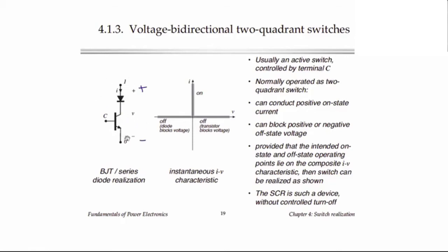As far as conducting current is concerned, the switch is only designed to allow positive current when it's on. When the current reverses polarity, the diode will become reverse biased and turn off, and the transistor in general isn't designed to conduct reverse current either. So we can only have positive current, making this a two-quadrant switch in which we can conduct positive current only but block either polarity of voltage.